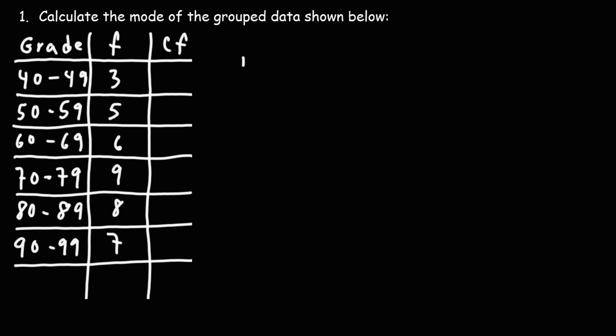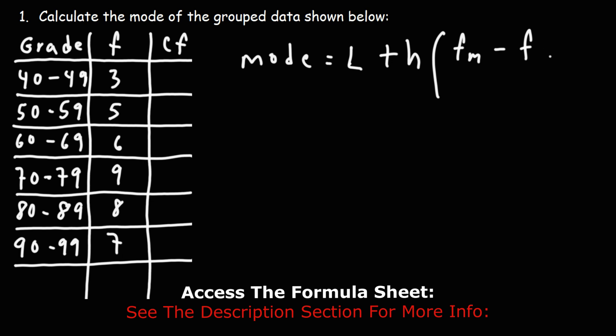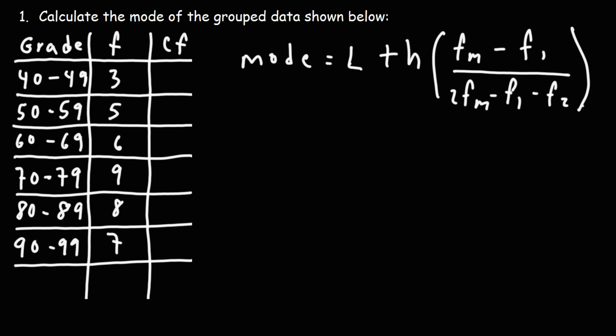Now, the formula that we need to calculate the mode is this formula. The mode is equal to L, which is the lower boundary of the modal class, plus H, the size of that class, times F sub M. FM is the frequency of the modal class minus F1, which is the frequency of the preceding class, over 2 FM minus F1 minus F2. F2 is the frequency of the succeeding class.